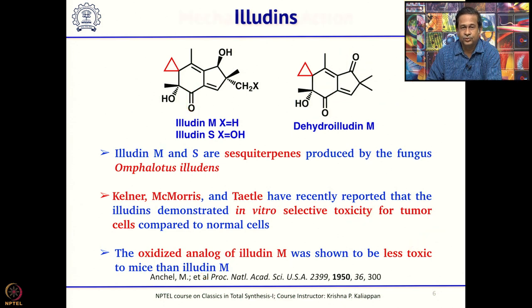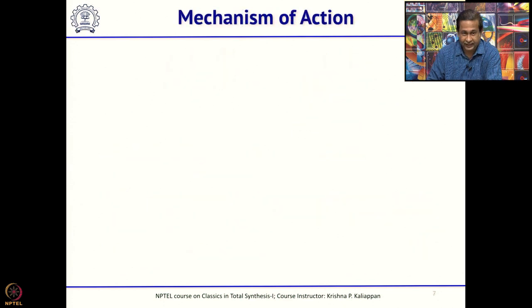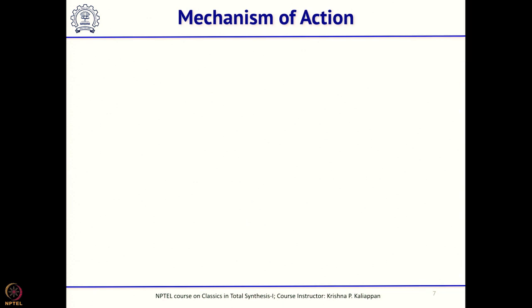The illudins show very good biological activity, particularly selective toxicity for tumor cells compared to normal cells. The oxidized analog has been shown to be less toxic than illudin M to mice. Before going to the synthesis, it is important to understand the mechanism of action of illudins to help design analogues.